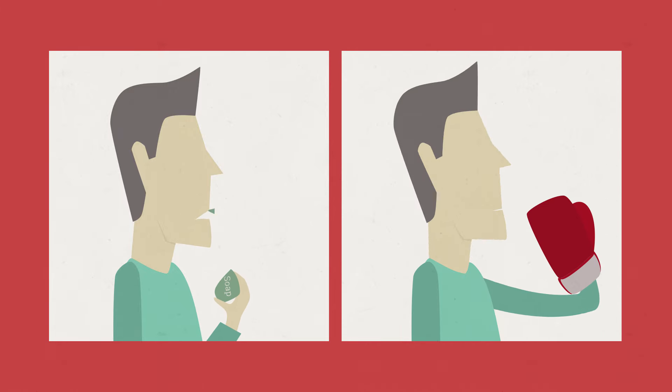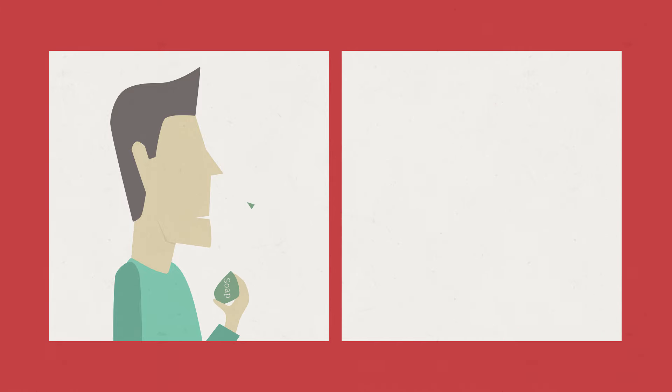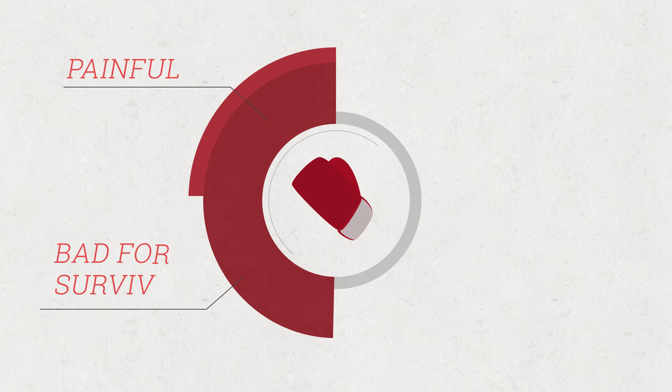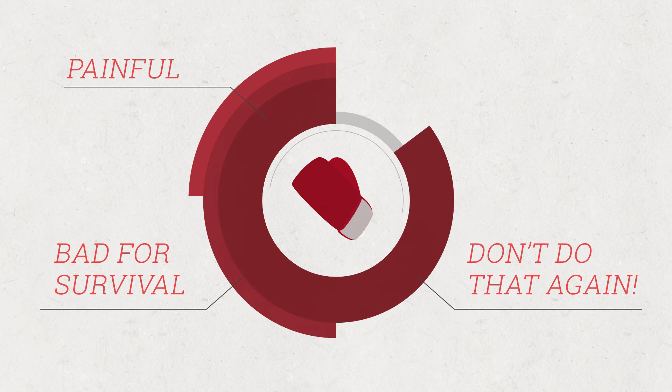Now, there are some things that will not cause the release of dopamine, like eating soap or punching yourself in the face. The brain knows that these things are not good, and therefore does not release the pleasurable dopamine because your brain does not want you to do it again.